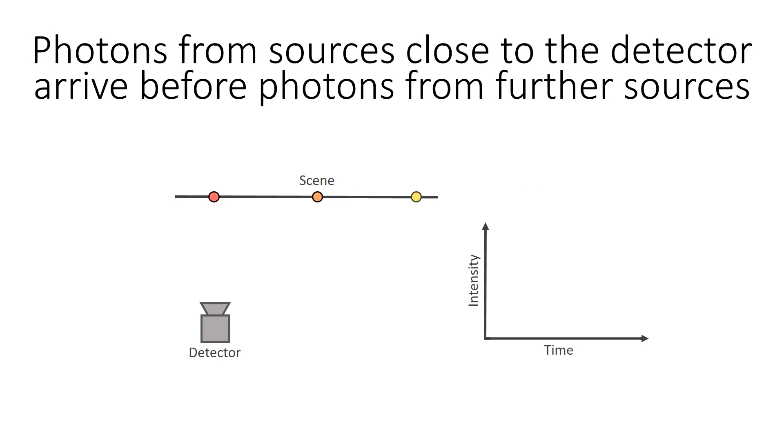Photons from sources close to the detector, like the red dot, arrive before photons from further sources, like the orange and yellow dots.